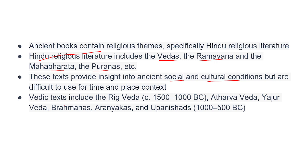Every Veda has its own importance and relevance. For example, the Yajur Veda mentions science. There are also these foreign inscriptions to be covered. The Boghaskoi inscription is basically a description of an accord between Hittani and Mitani states that mentions four Vedic deities: Indra, Mitra, Varuna, and Nasatya. The Behistun inscription and Naqsh-e-Rustam inscription describe Iranian Emperor Darius I.